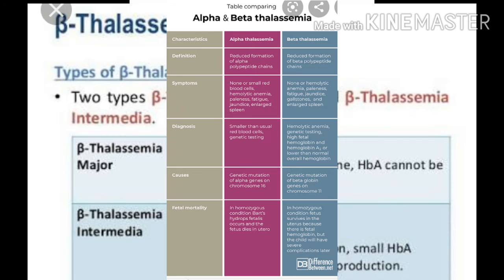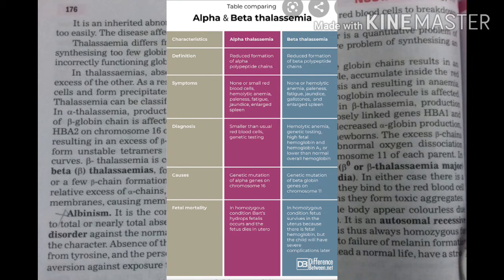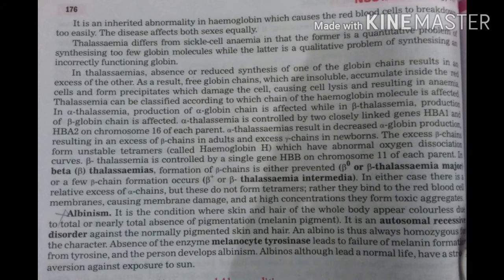Alpha thalassemia is controlled by two closely linked genes, HbA1 and HbA2, on chromosome 16 of each parent. Alpha thalassemia को control करने वाले दो closely linked genes होते हैं — HbA1 और HbA2 — जो chromosome number 16 पर पाए जाते हैं, mother में भी और father में भी। Alpha thalassemia results in decreased alpha globin production, resulting in excess of beta chains in adults and excess gamma chains in newborns. The excess beta chains form unstable tetramers called hemoglobin H, which have an abnormal oxygen dissociation curve.